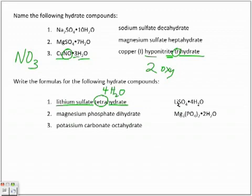Lastly, we have potassium carbonate octahydrate. Octa being eight. So we have eight molecules of water, and it's K2CO3 with eight molecules of water.